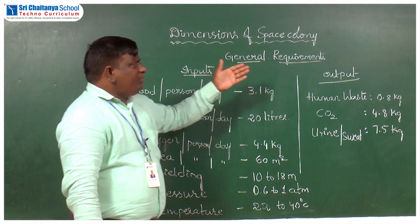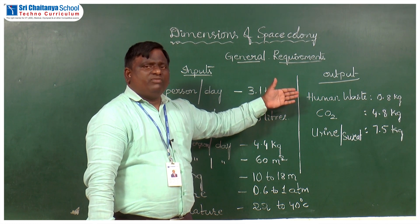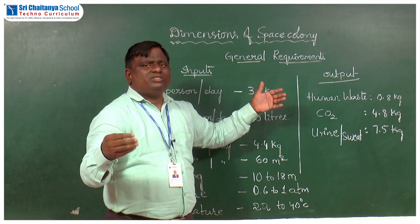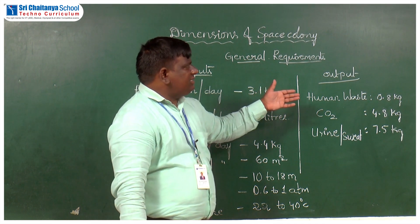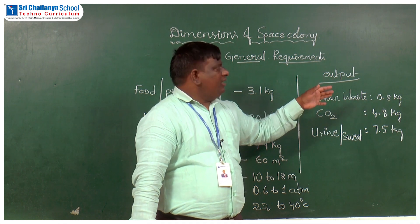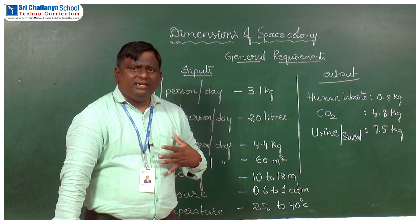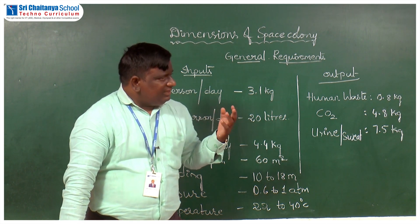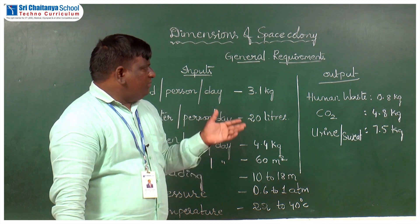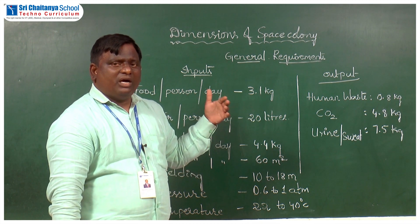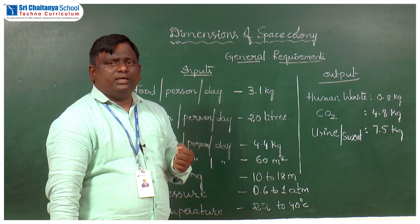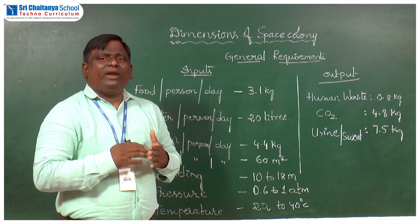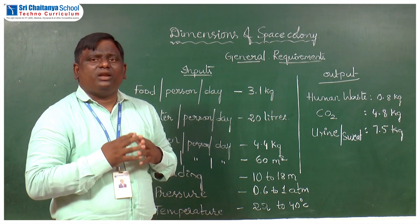The outputs come from these inputs. After eating 3.1 kg of food per day, human waste output is 0.8 kg per day. After inhaling 4.4 kg of oxygen, humans exhale 4.8 kg of carbon dioxide. And after drinking 5 to 6 liters of water per day, humans give out — in urine or sweat form — a total of 7.5 kg of water. Based on these inputs and outputs, we would have our regenerative life-supporting system calculations for our space colony.